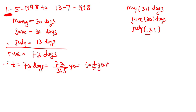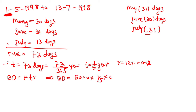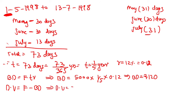Rate of interest is 12%, equal to 0.12. Apply the formula BD is equal to FTR. BD equals face value 5000 into T equal to 1/5 into rate of interest 0.12. Simplifying, BD is equal to Rs.120. Then discounted value equals F minus BD: discounted value equals 5000 minus 120 equals Rs.4880.